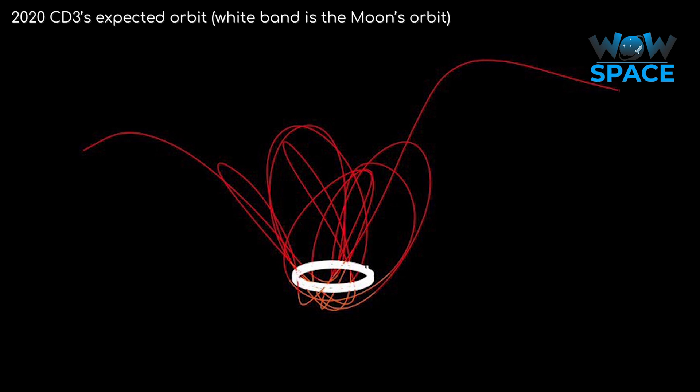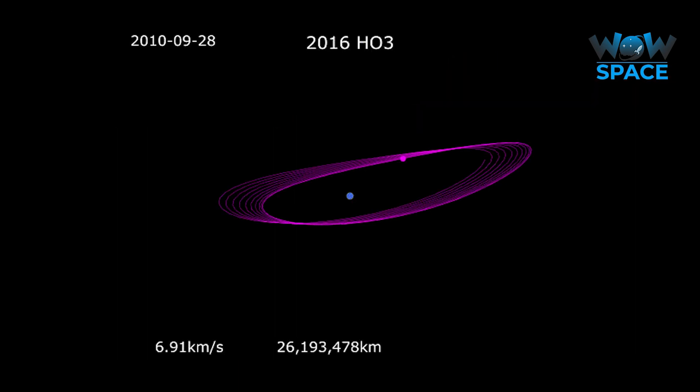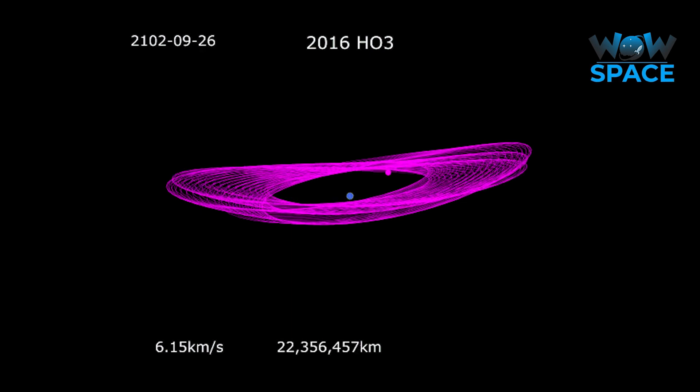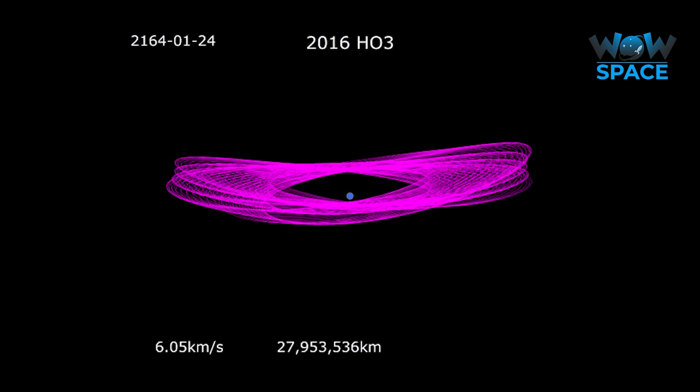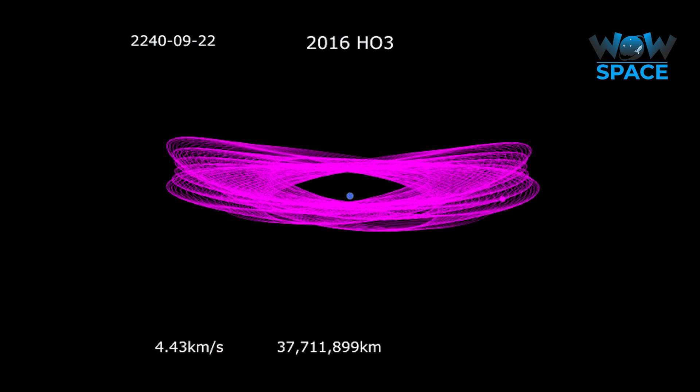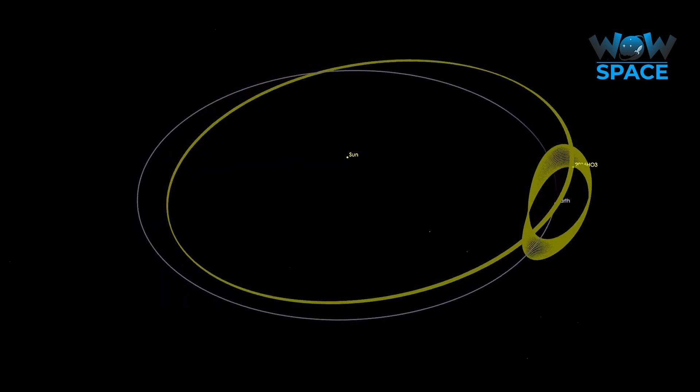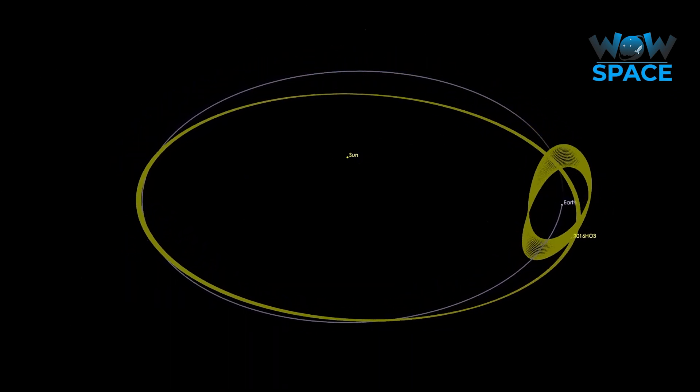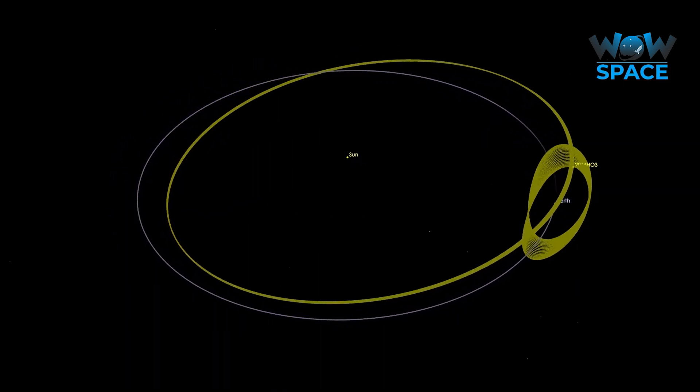There is another asteroid orbiting Earth at a distance of about 9 million kilometres, much further out than the moon, called 2016 HO3. Except, although it's circling around Earth, it's not really orbiting the Earth at all. Instead, it's orbiting the Sun, and its orbit is very similar to Earth's, just a little more eccentric.